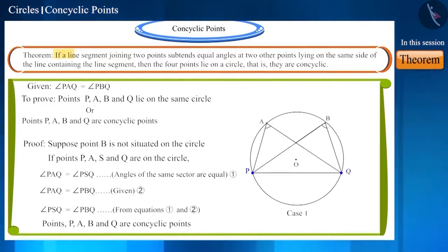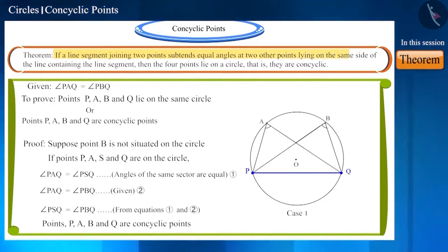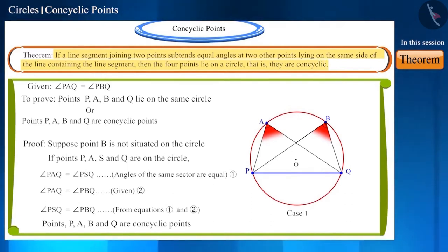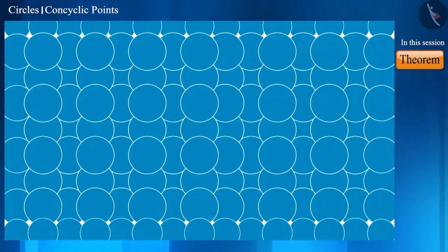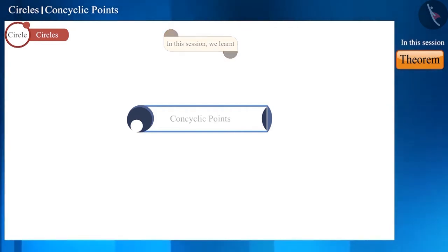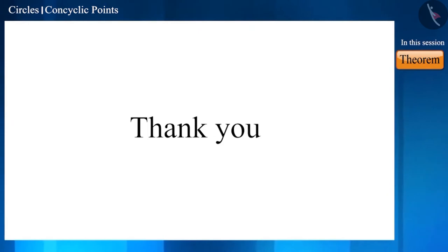Thus we proved that if a line segment joining two points subtends equal angles at two other points lying on the same side of the line containing the line segment, then the four points lie on a circle — that is, they are concyclic. That's all for this session. We discussed concyclic points and a theorem related to them. See you in the next video with one more question based on this. Thank you.